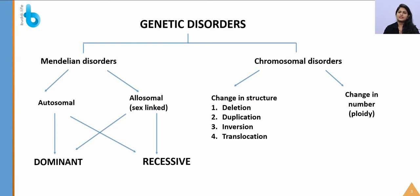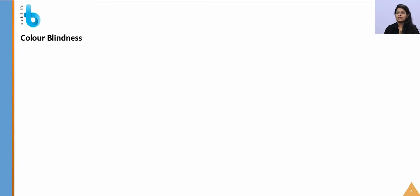Changes in chromosome structure include deletion, duplication, inversion, and translocation. Changes in chromosome number are classified under ploidy.